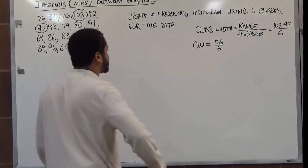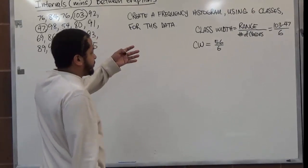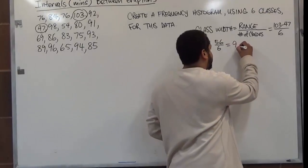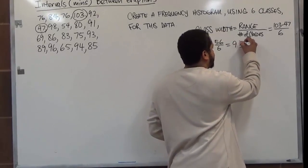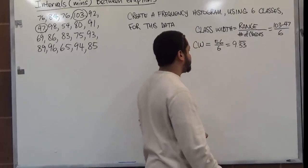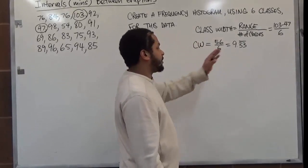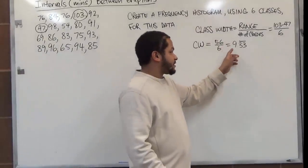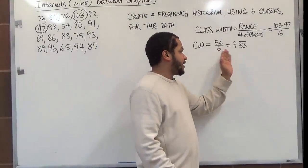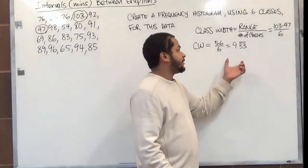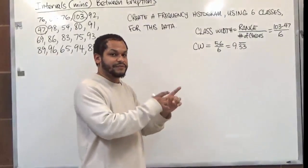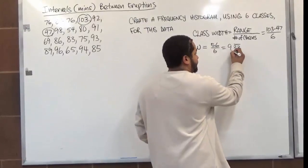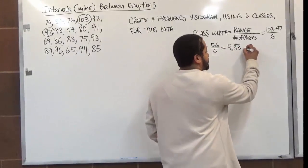So our class width, which I'll abbreviate as CW, is a hundred and three minus forty-seven, which gives us fifty-six. We divide that by six. Fifty-six divided by six gives us exactly nine point thirty-three repeating, which we'll have to round up.